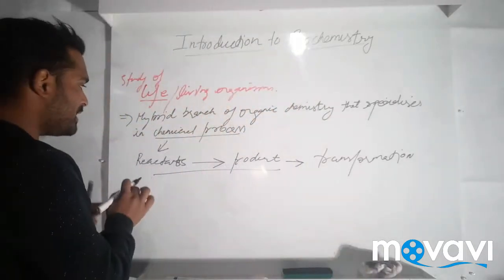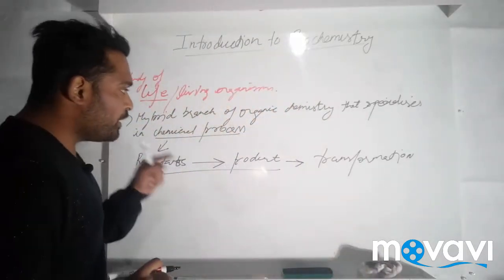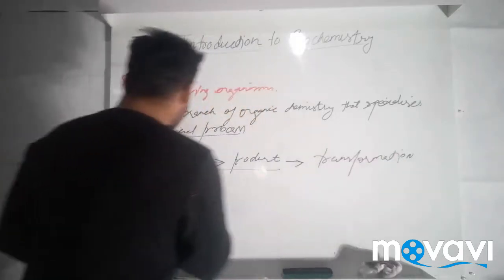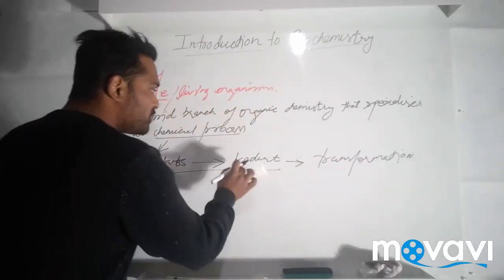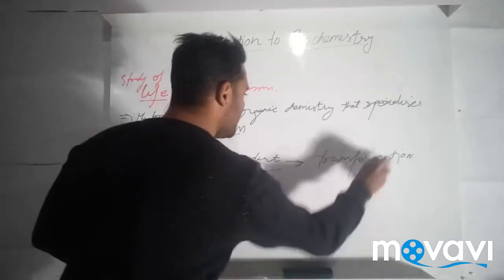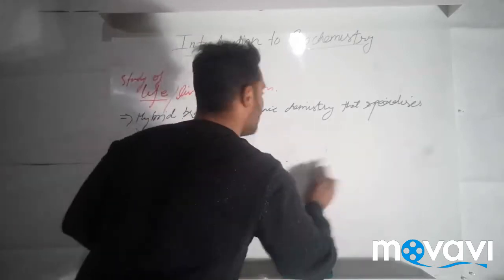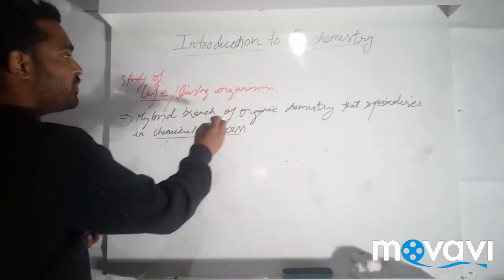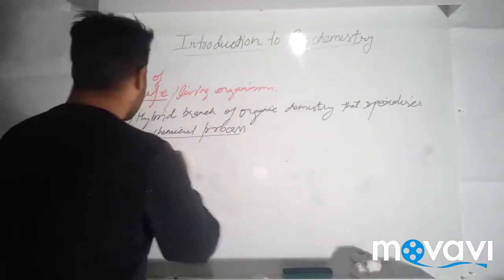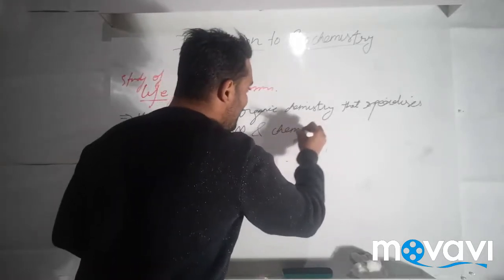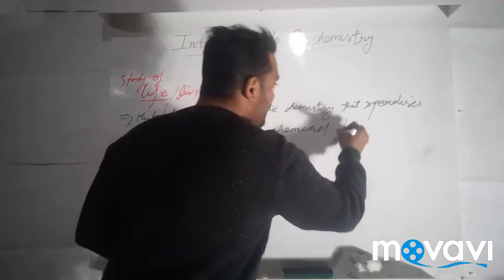Chemicals react with each other and form products. This is known as transformation—they are transformed into something else. So biochemistry is the hybrid branch of organic chemistry that specializes in chemical processes and chemical transformation.